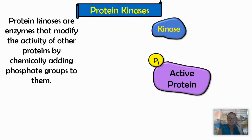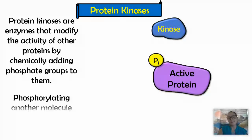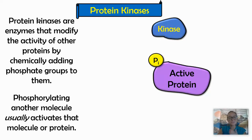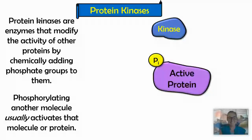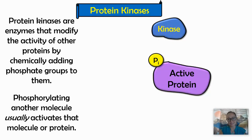Protein kinases are enzymes that modify the activity of other proteins or molecules by chemically adding phosphate groups to them. Phosphorylating another molecule usually means that molecule or protein is now active. In our discussions, when we add a phosphate to a molecule, we are activating that molecule, and the kinase is the enzyme that adds those phosphates.